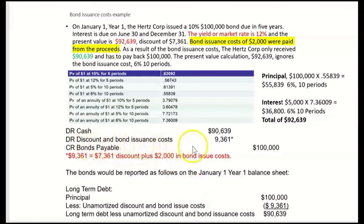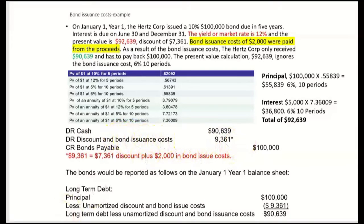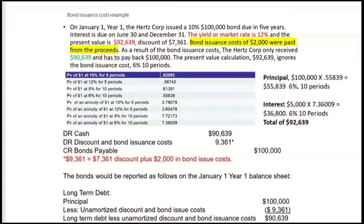Notice that we combine the discount and the bond issuance costs. When we go to amortize the discount, we amortize the discount and bond issuance costs at the same time — and we do that with every interest payment.